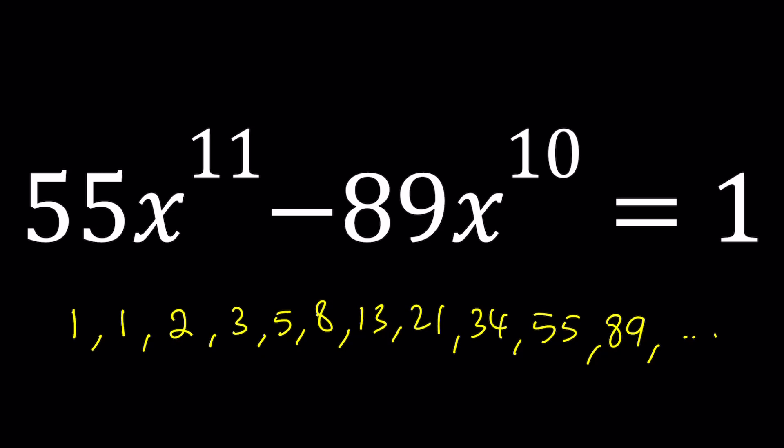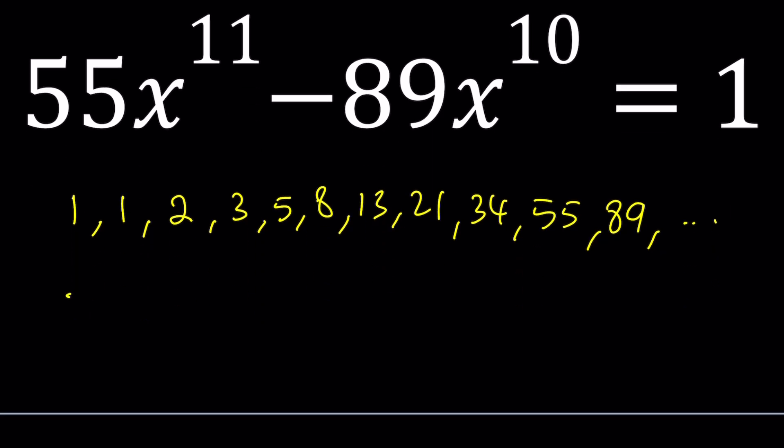And you also hopefully know that the generating function for this sequence, which can be written as n equals 1 to infinity, f sub n times x to the power n, which is basically a power series whose coefficients are Fibonacci numbers. So f sub 1 x plus f sub 2 x squared, and so on.